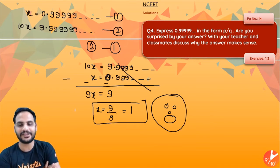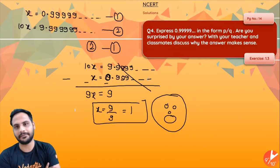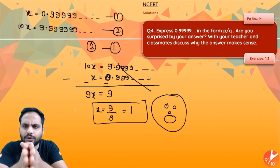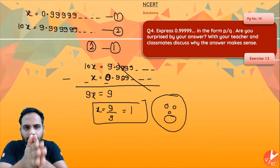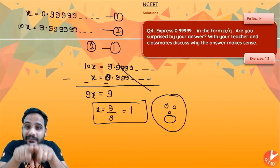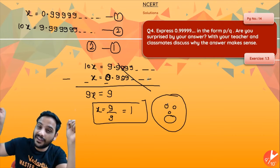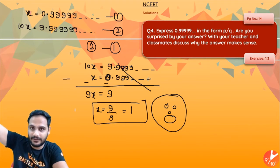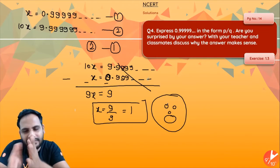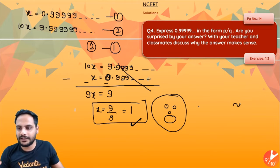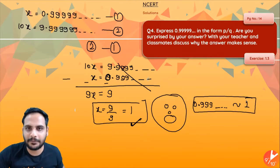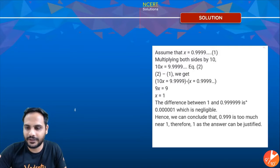Yes, we got x = 1, not a fraction — quite a shock! The point is that 0.9999... is very close to 1. In fact, the difference between 0.9999... and 1 is 0.0000...1 with infinite zeros — so they are approximately equal. That is why we get the answer as 1.